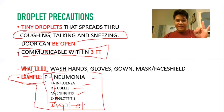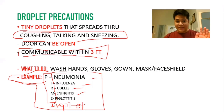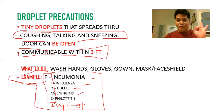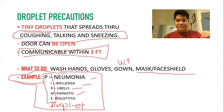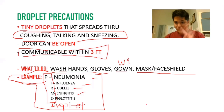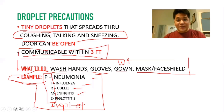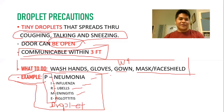Remember PIRME: Pneumonia, Influenza, Rubella, Meningitis, and Epiglottitis — these are your droplet diseases. They always ask about this. For droplet precautions, there are four W's: wash hands, wear gloves, wear gown, and wear a mask or face shield. Also remember that the door can be open for droplet precaution clients.